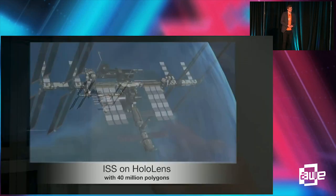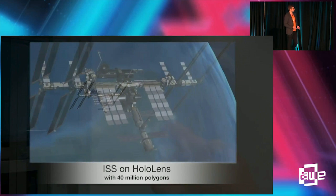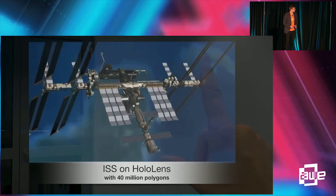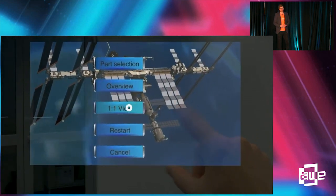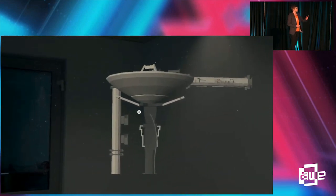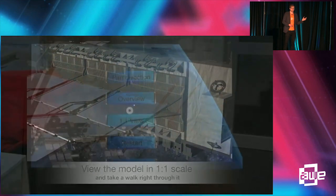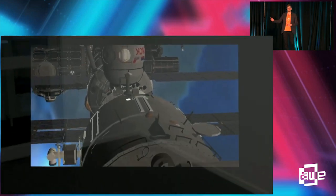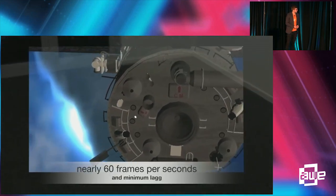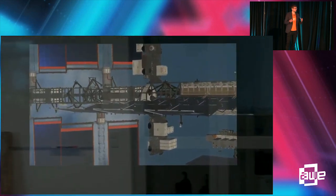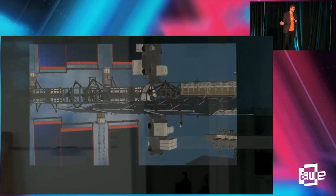I have one example to show. Unfortunately most HoloView files are confidential, but here is one we did: the International Space Station, a file with around 40 million polygons, shown in a live video capture from a Microsoft HoloLens. As you can see, it's running. Due to the live stream there may be more latency than you would feel if you actually wore the glasses. But it shows you can get a stable picture of a real file — you don't lose information, you don't lose details, you don't need to remove all the screws from a machine. And that's the big advantage of the solution.